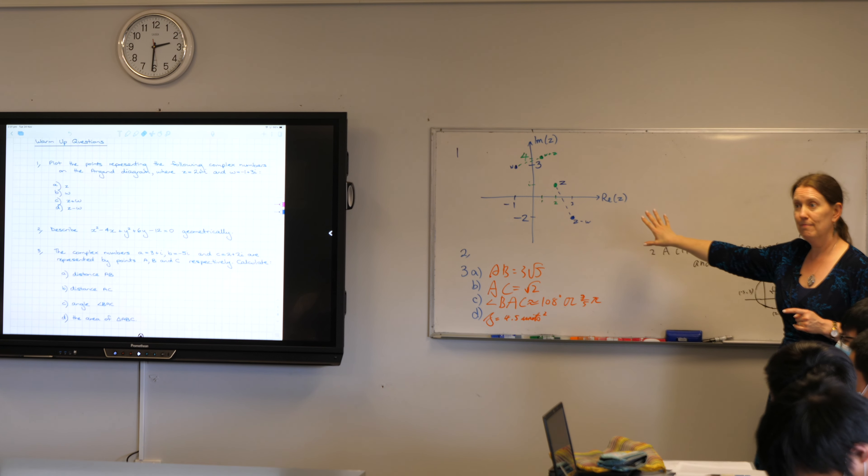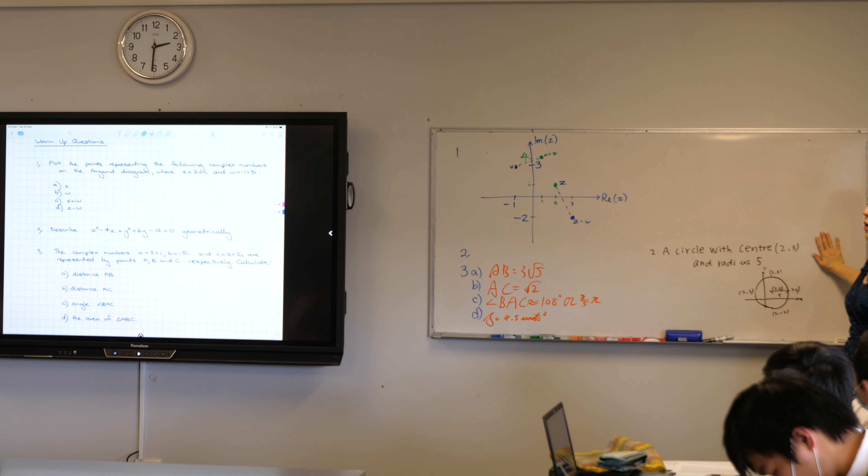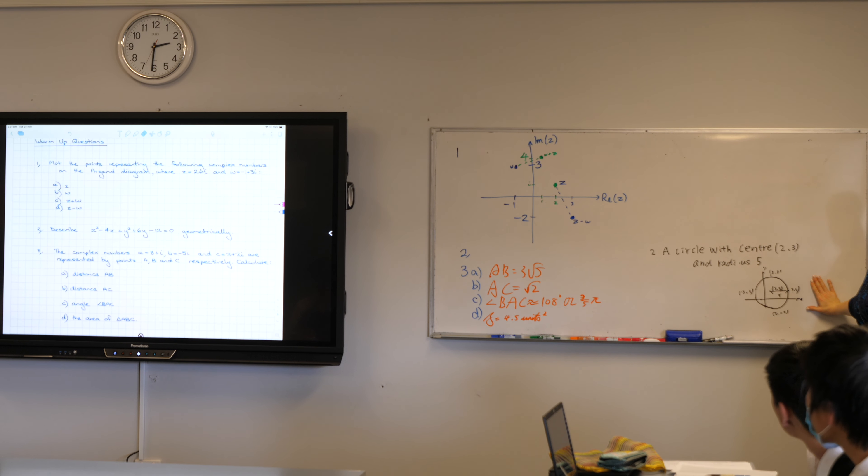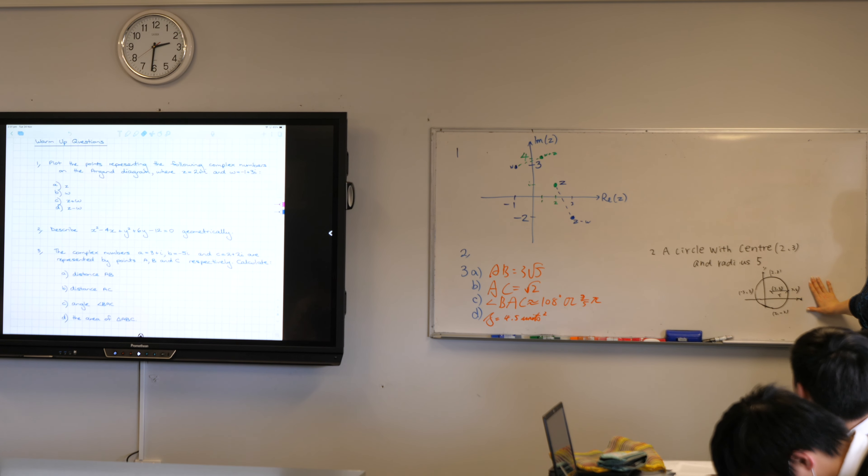Are we happy with one? Did we get to two and go, oh, thank God. Although Susie has exceeded everybody else, I think, in drawing a diagram. Who else drew a diagram? I think I only saw one. I picked my person deliberately. Everyone else happy with circle center, two, three, and a radius of five?